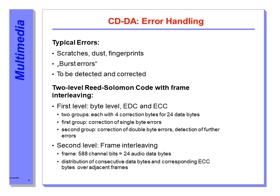Now let's discuss the error handling concept. The goal of error handling on a Compact Disc Digital Audio is the detection and correction of typical error patterns. An error is usually the result of scratches, dust, or fingerprints — these can be characterized as burst errors and must be detected and corrected.